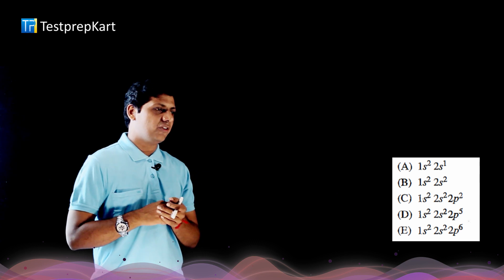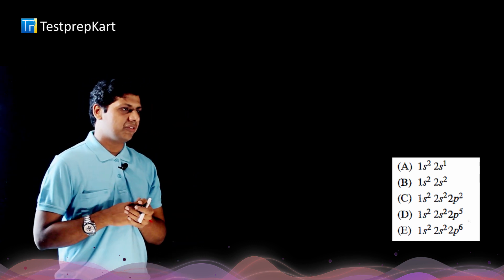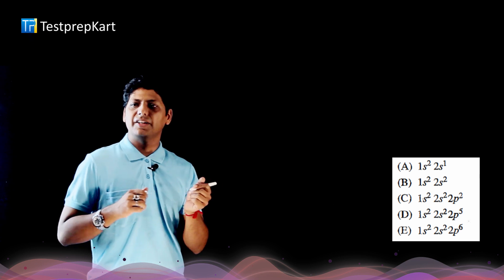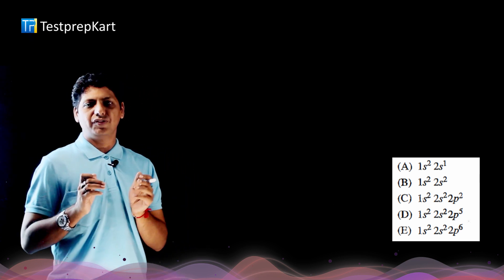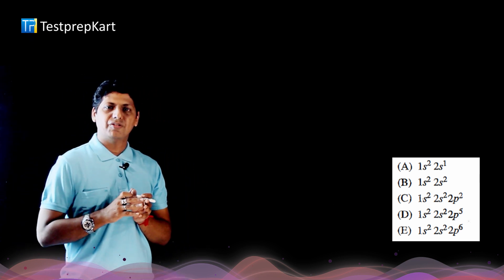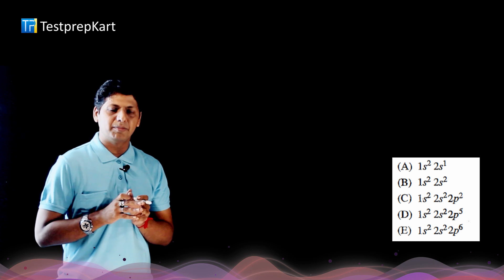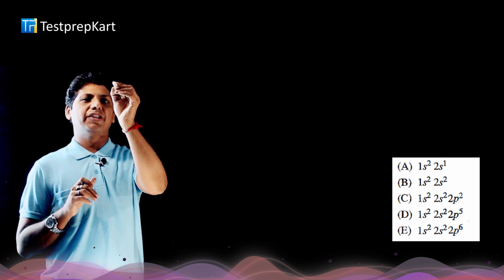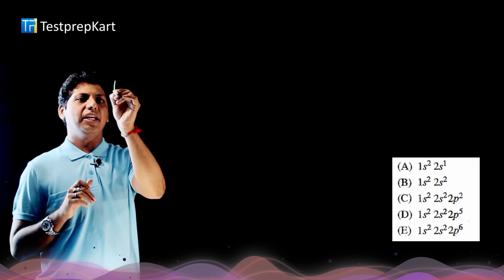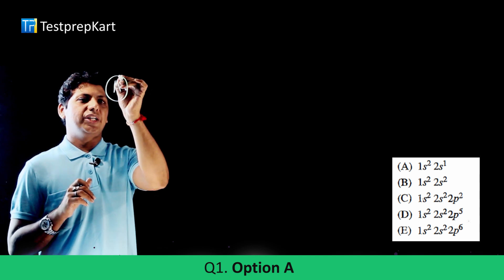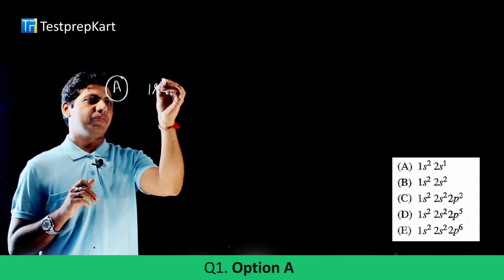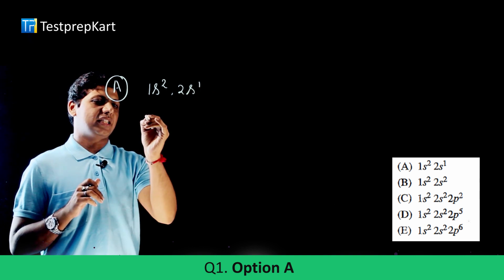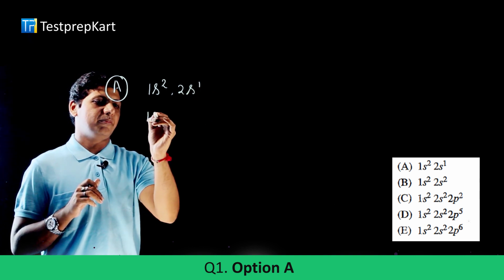We need to find the answer from the five given electronic configurations. Option A is 1s²2s¹, which represents a Group 1 element — specifically lithium. So the answer to question 1 is option A: configuration 1s²2s¹, which is the lithium atom.